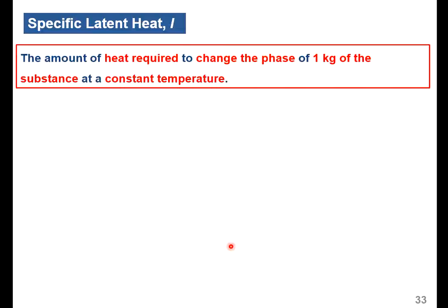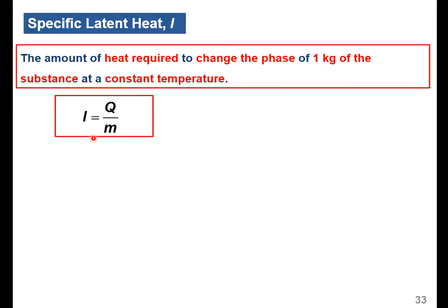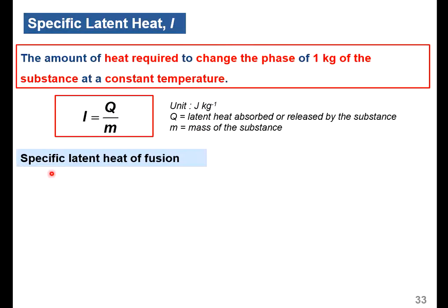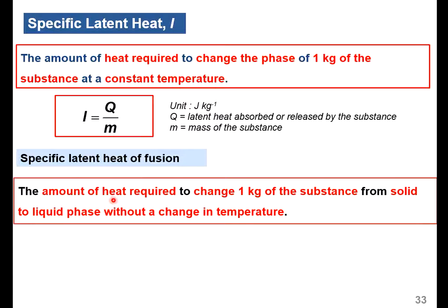Specific latent heat (small l) is the amount of heat required to change the phase of 1 kg of substance at a constant temperature. The formula for specific latent heat is: l = Q/m, where the unit for specific latent heat is joule per kg. Q is the latent heat absorbed or released by the substance and m is the mass of the substance. Specific latent heat of fusion is the amount of heat required to change 1 kg of substance from solid to liquid phase without a change in temperature.